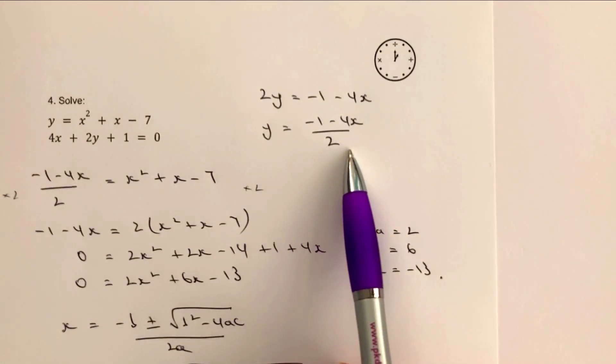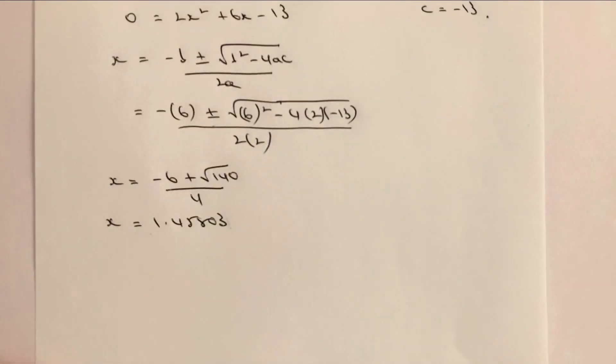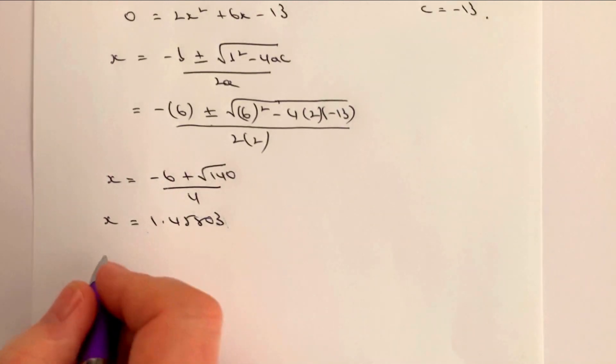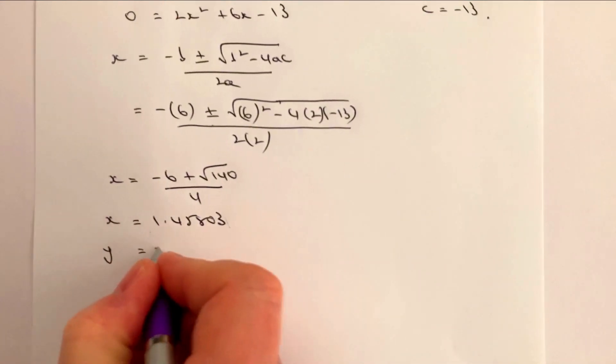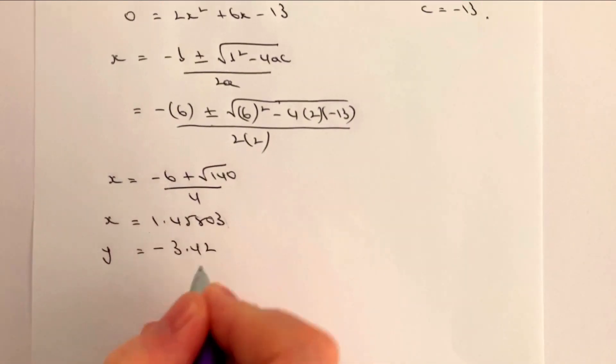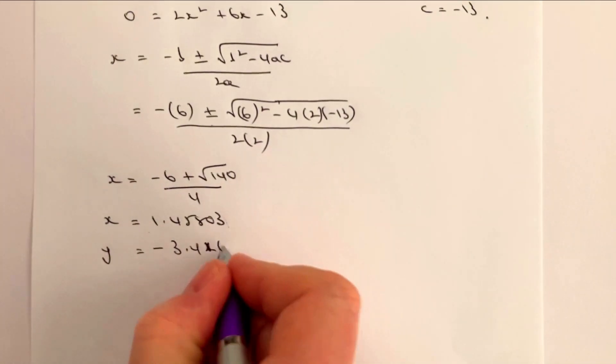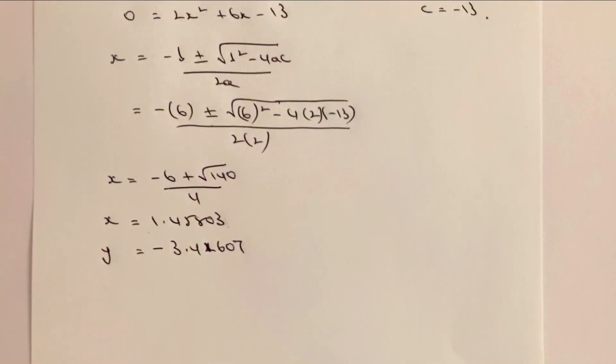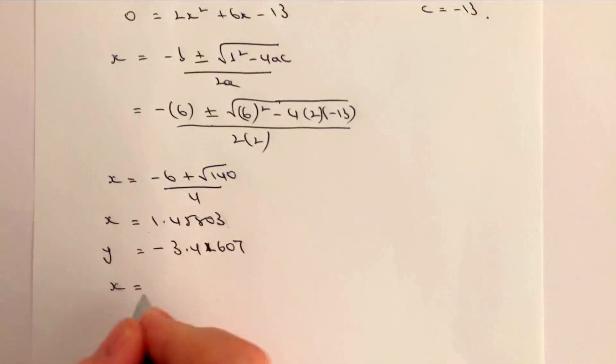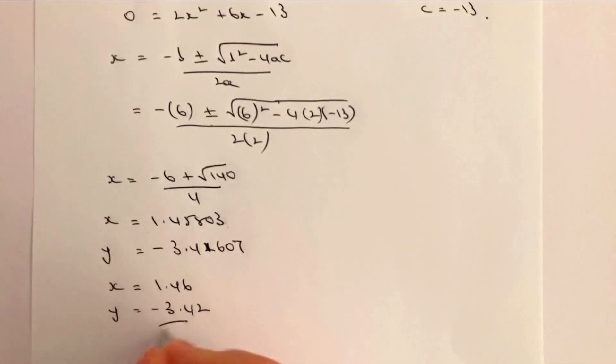But when you've done that you should get then a value of y that's going to equal to minus 3.42, okay, or 3.41607. Okay, so to two decimal places, and it hasn't asked for that in the question, but it's close enough, x equals 1.46 and y equals minus 3.42. Okay, that would be the answer, so that one where we've got a positive value.